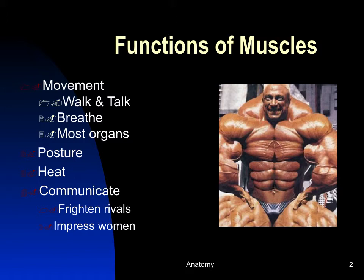The muscular system produces voluntary movement — walking, talking, breathing. It also includes movement in internal organs like the cardiovascular system and the digestive system, which involve other types of muscles. Skeletal muscles also contract to hold you in position, maintaining posture.